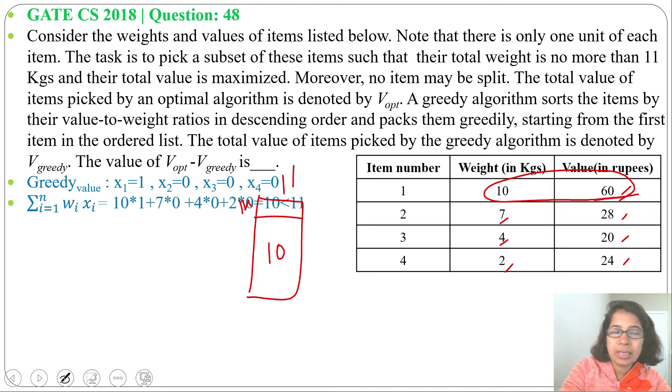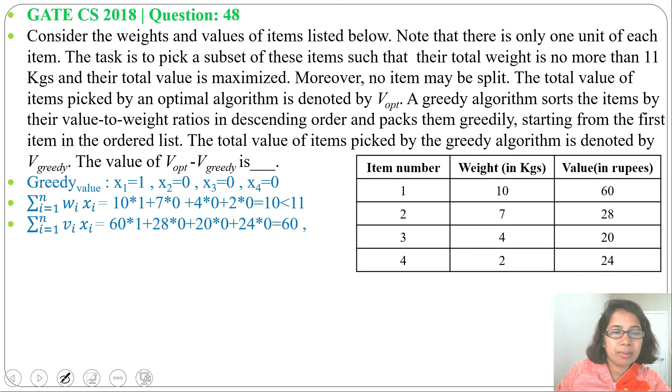Now total weight equals 10×1 + 7×0 + 4×0 + 2×0 = 10 kg. Next, total value equals 60×1 + 28×0 + 20×0 + 24×0 = 60.